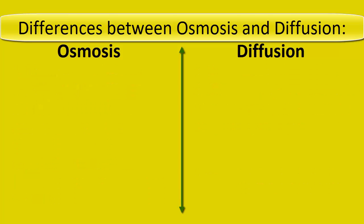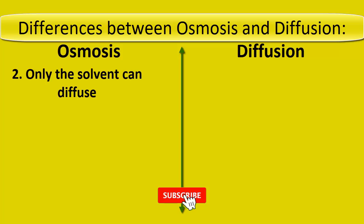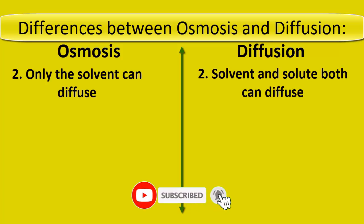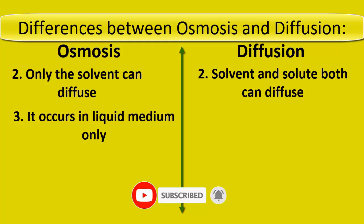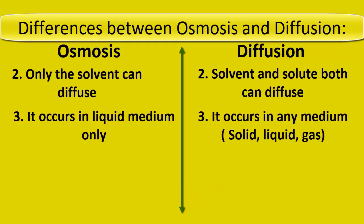In osmosis, only the solvent can diffuse. In diffusion, both solvent and solute can diffuse. Osmosis occurs in liquid medium only; diffusion occurs in any medium — solid, liquid, or gas.